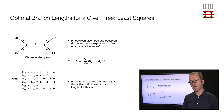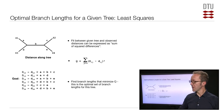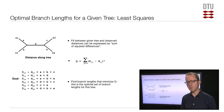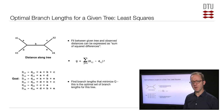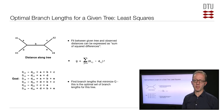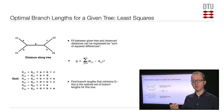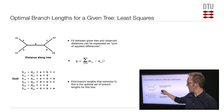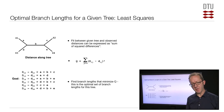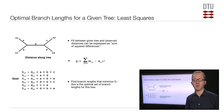It's not always possible to find a tree with branch lengths giving an exact match between observed and patristic distances. In those cases, we instead try to get as close as possible, using the measure Q — the sum of squared residuals — where for each pair of sequences we take the observed distance, subtract the tree distance, square that difference, and sum up all those terms. In the best case, Q will be zero; otherwise, we minimize Q.